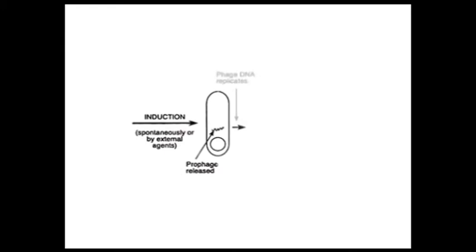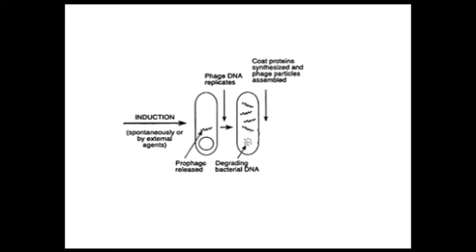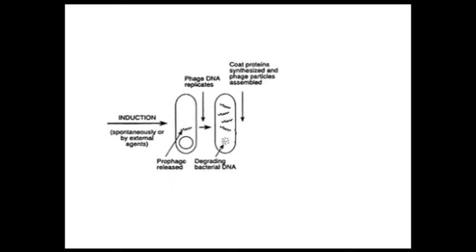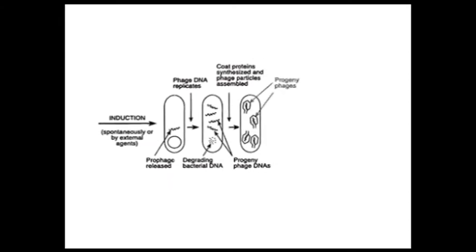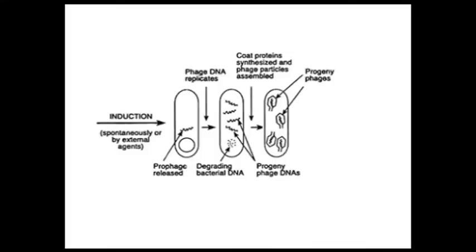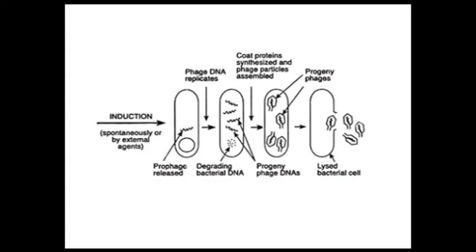The host cell's DNA is destroyed and the virus takes over the cell's metabolic activities. The virus then uses the cell's metabolism for its own multiplication, producing progeny phages. Replication takes place at a faster rate and the cell is filled with 100 to 200 new viruses. As the cell becomes overcrowded, the virus releases an enzyme to break the cell wall, which bursts and releases the new viruses — a process termed lysis. In short, the lytic cycle shuts down the host cell machinery and destroys it.